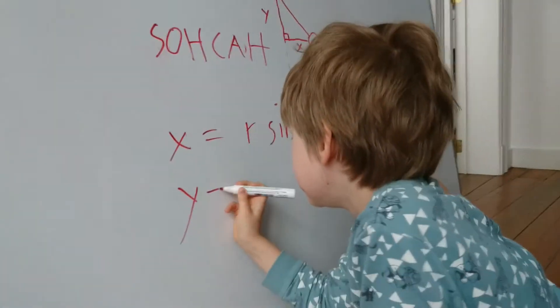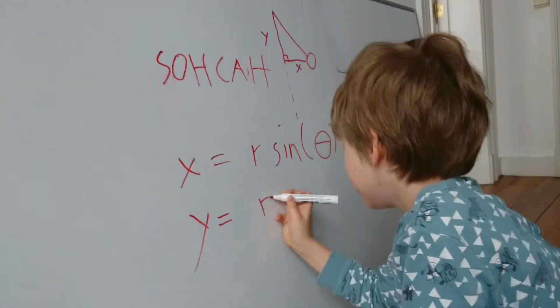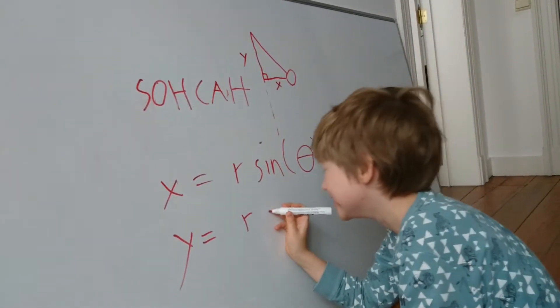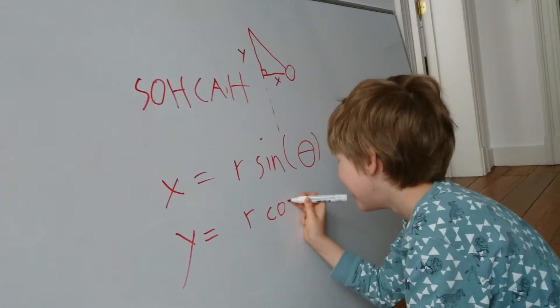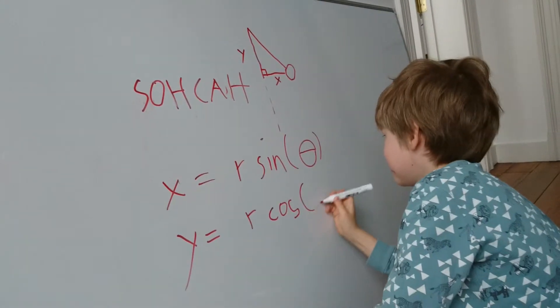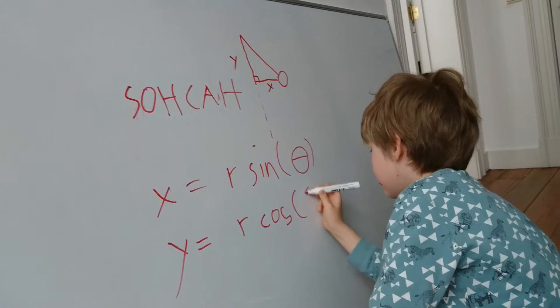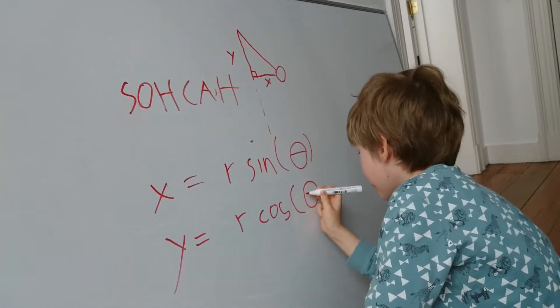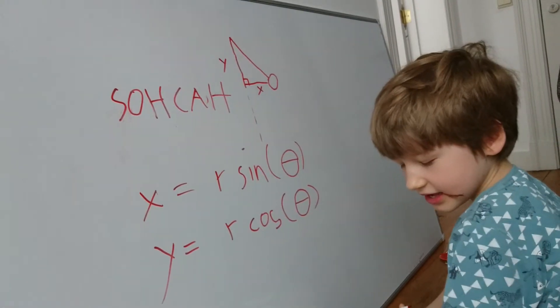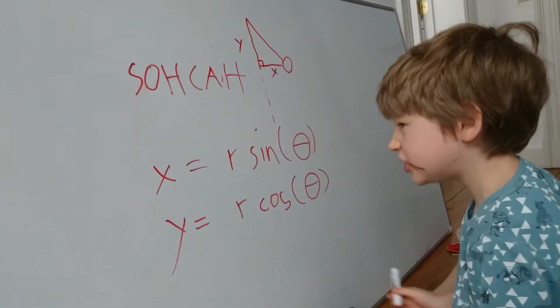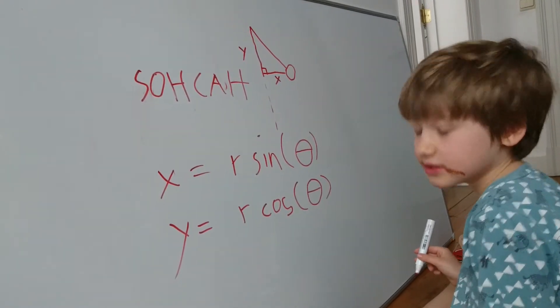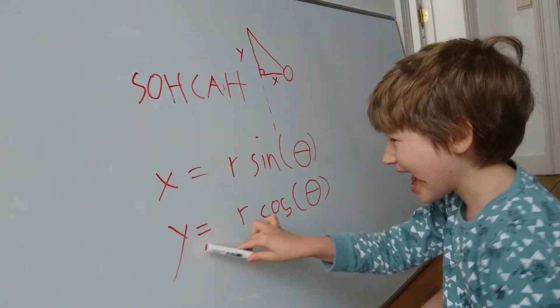Y equals R. Instead of phi, we actually use cosine for Y. Whichever one has cosine, the angle is relative to that axis.